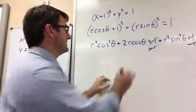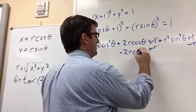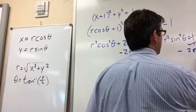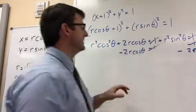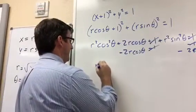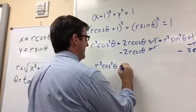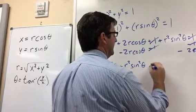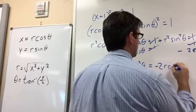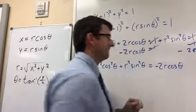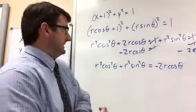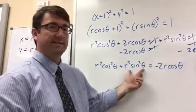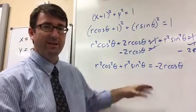Now I want to get the r² terms by themselves on one side of the equation, so let's subtract 2r cosθ from both sides. We're left with r² cos²θ + r² sin²θ = -2r cosθ.